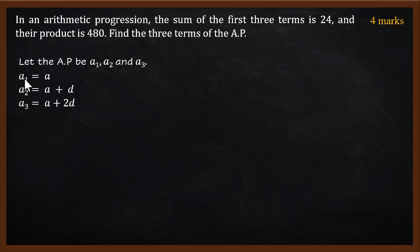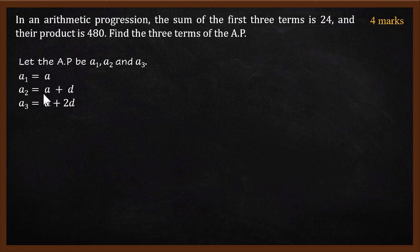In standard Arithmetic Progression form, a1 is the first term. The second term a2 is obtained by adding the common difference d, so a2 equals a plus d. The third term a3 is obtained by adding d again to the previous term, giving a plus 2d.